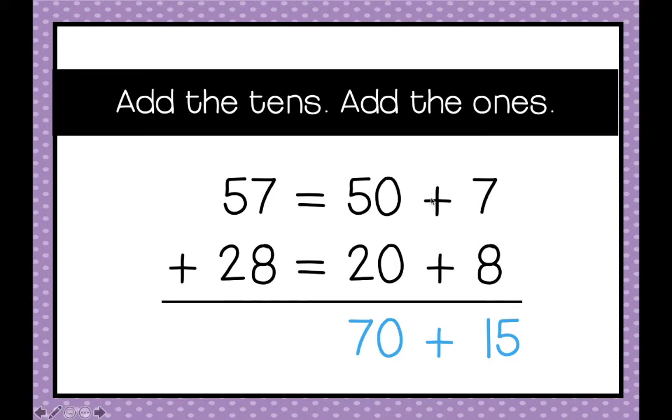Now we add the tens. 50 plus 20 equals 70. And we add the ones. 7 plus 8 equals 15.